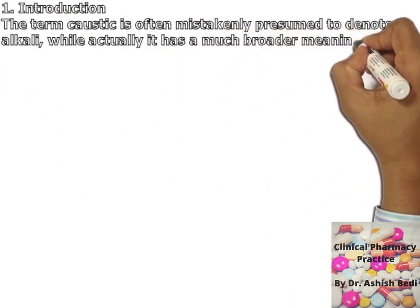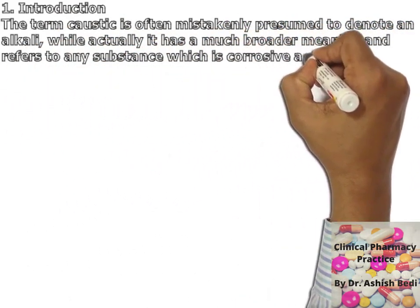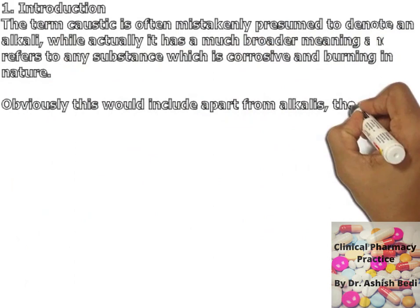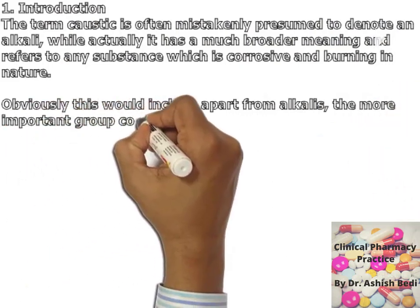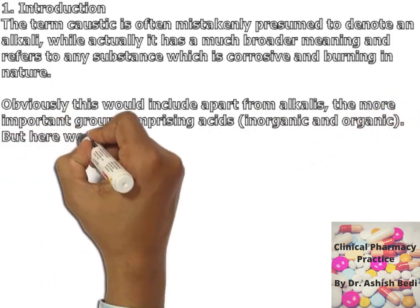I want to clear one doubt regarding caustics. The term 'caustic' is often mistakenly presumed to denote an alkali, but that is not correct. A caustic is a substance which can cause corrosion, a burning sensation, or a burning symptom on a particular area — it can cause a corrosive and burning action. Caustics are substances that are corrosive and burning in nature.